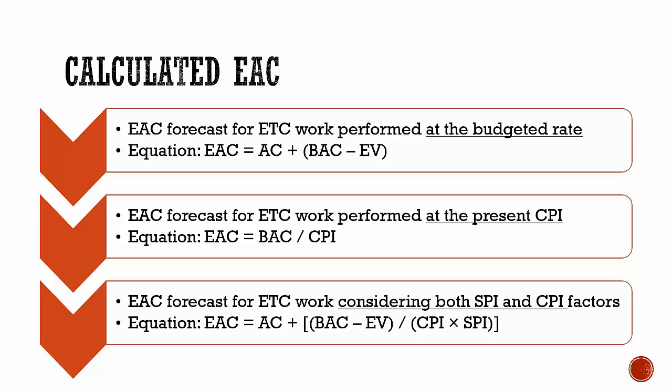The second EAC forecast assumes that the ETC work will be performed at the present CPI. What the project has experienced till now, it will be expected to continue in the future. The ETC work is assumed to be performed at the same cumulative cost performance index as till today.